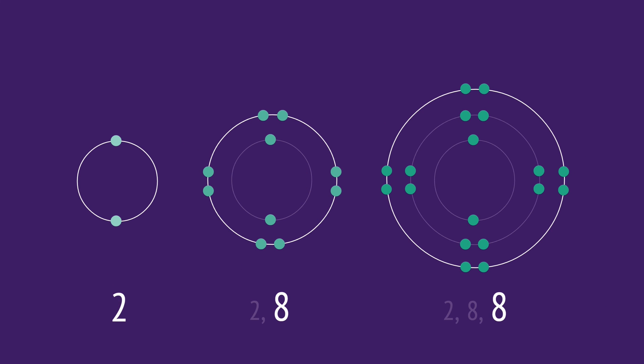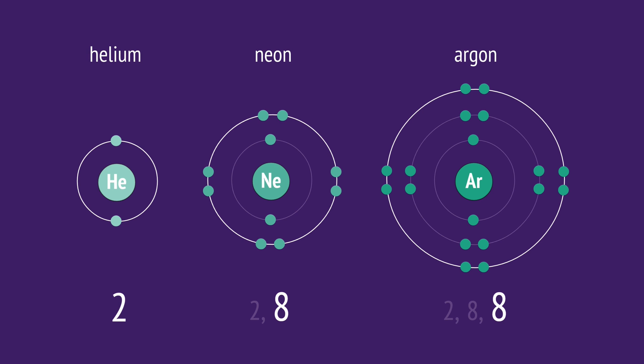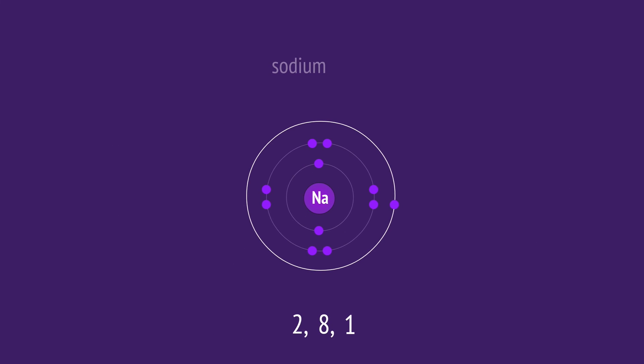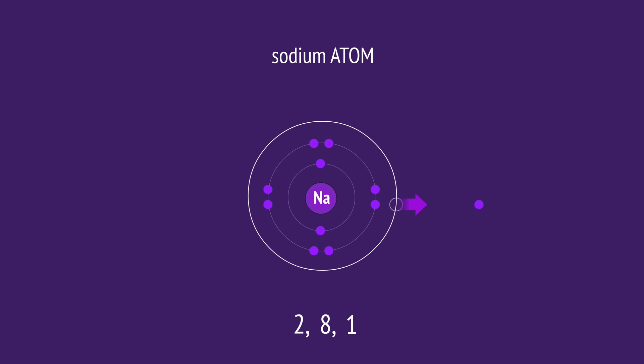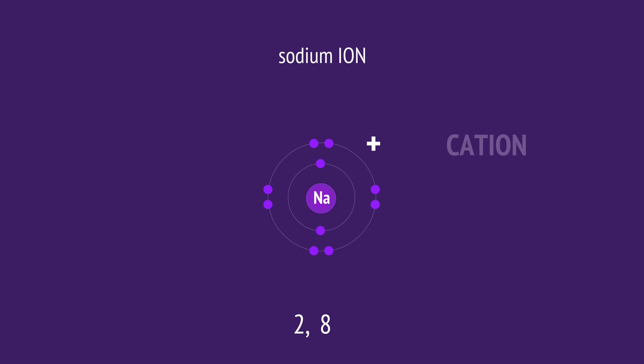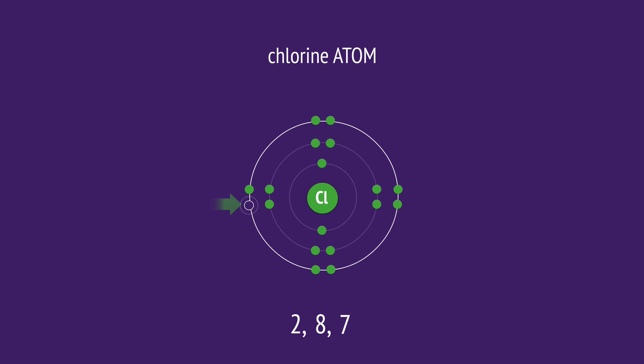In this video, we've seen how atoms try to complete their outer shells to achieve the same stable electron arrangement found in the noble gases. Metal atoms do this by losing their outer electrons, forming positive ions, or cations. And nonmetal atoms do this by gaining electrons, forming negative ions, or anions. Nonmetal atoms will also share electrons with other nonmetal atoms to achieve full outer shells.